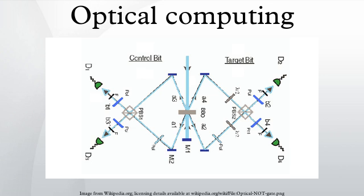Misconceptions, challenges, and prospects: a claimed advantage of optics is that it can reduce power consumption, but an optical communication system typically uses more power over short distances than an electronic one. This is because the shot noise of an optical communication channel is greater than the thermal noise of an electrical channel, which from information theory means that more signal power is required to achieve the same data capacity.